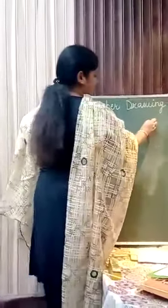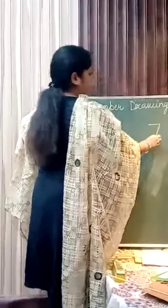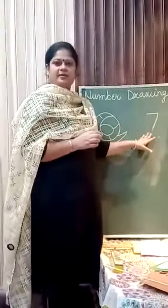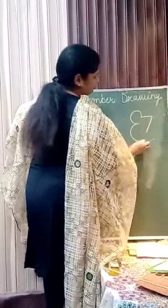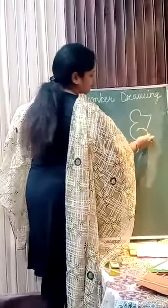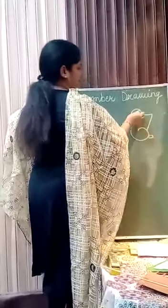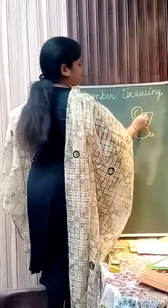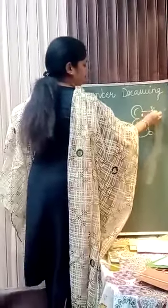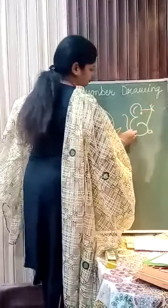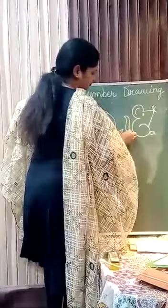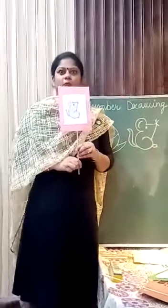Now, after 6, number 7. Write like this — number 7. Now, this is a rat. Good one, na? Now, 6, 7. What comes after 7?